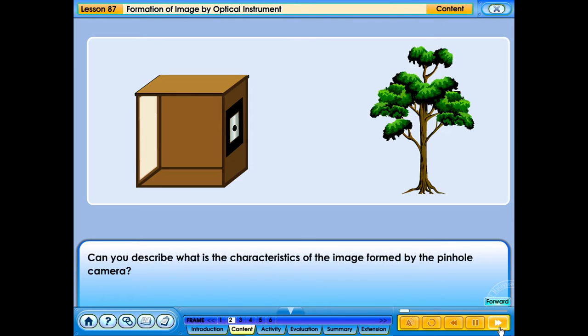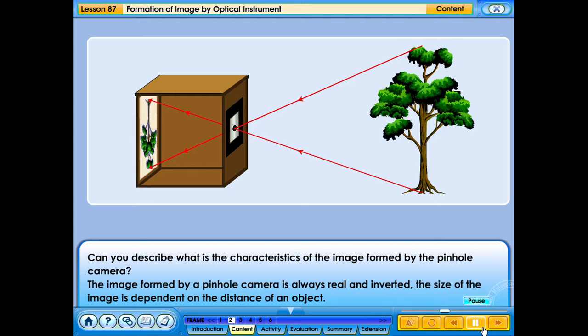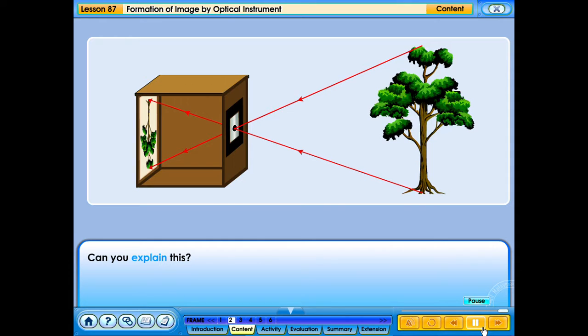Can you describe the characteristics of the image formed by the pinhole camera? The image formed by a pinhole camera is always real and inverted. The size of the image is dependent on the distance of an object. Can you explain this?